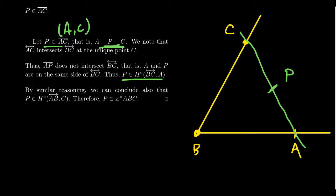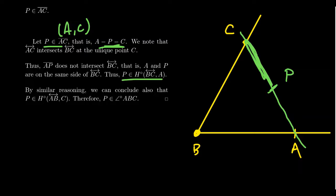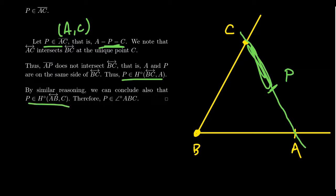By similar reasoning, lines BA and CA intersect at the unique point A. If the segment PC, which is a subset of line AC, were to intersect line BA, it would have to be at point A, implying A is between P and C — but by trichotomy that contradicts P being between A and C. Therefore C and P are on the same side of line BA, meaning P is in the open half plane associated to line AB on the same side as C. So P is in both open half planes — their intersection is the interior of the angle — and that proves the Betweenness Lemma.